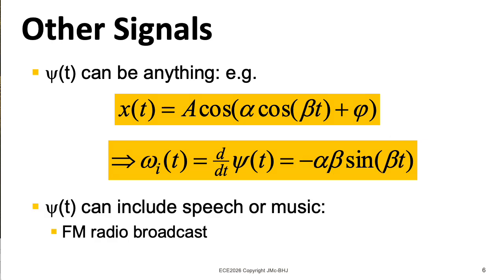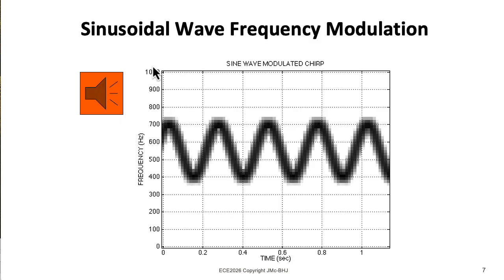And as I mentioned before, psi can include all kinds of information. Here's an example of a siren kind of sound. So the spectrogram looks like a sinusoid.